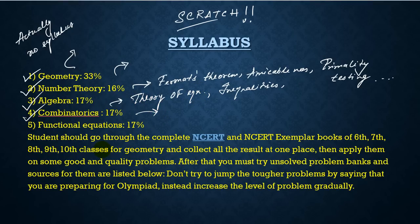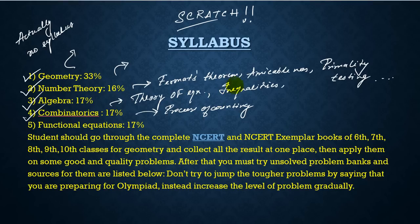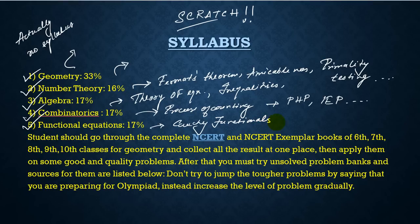The combinatorics section is the process of counting. For those not yet in class 11, it may sound simple, but it involves the pigeonhole principle, the inclusion-exclusion principle, and much more. Then there are functional equations, covering how functions behave, including Cauchy functional equations, which form a huge part of the syllabus.